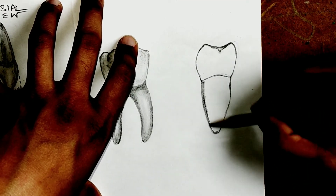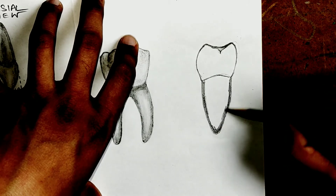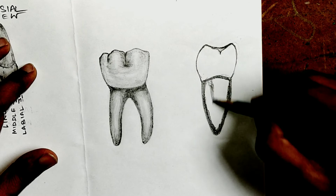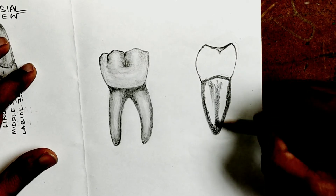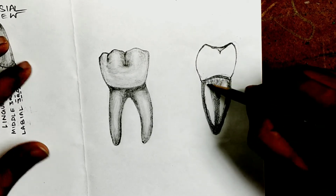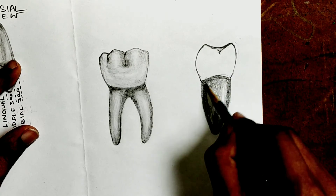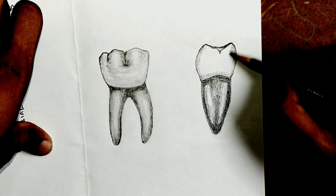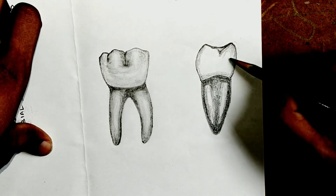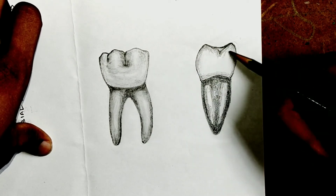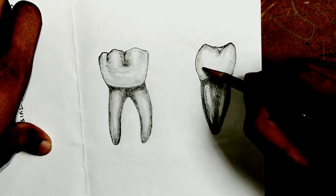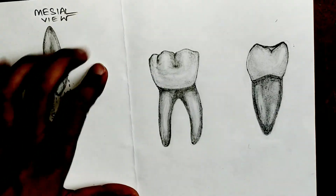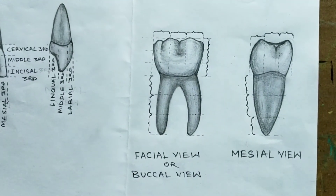Now we discuss about purposes of dividing the tooth into thirds. The surfaces of crowns and roots of teeth have been divided into thirds. Actually, there are no plain surfaces on the teeth anywhere, but such a division helps in describing the morphology of the tooth in detail.